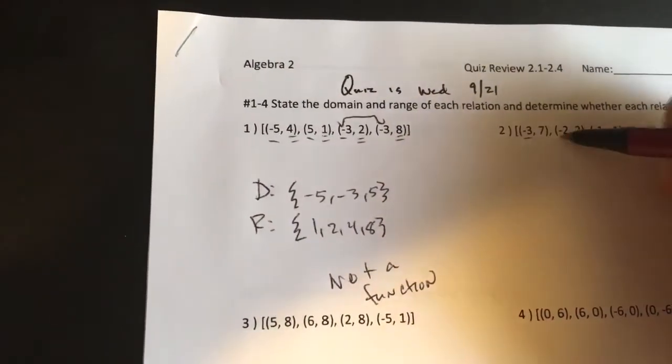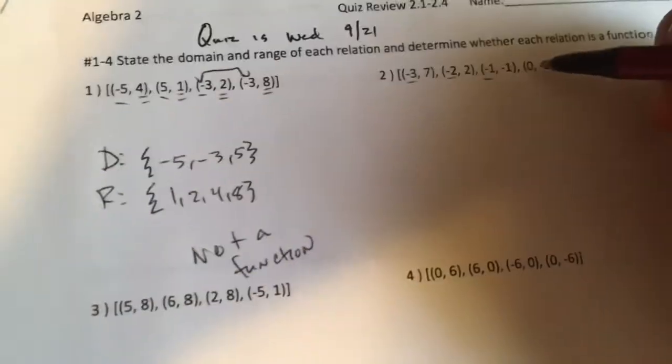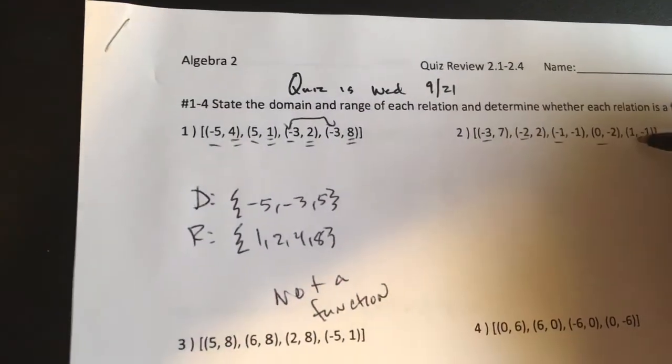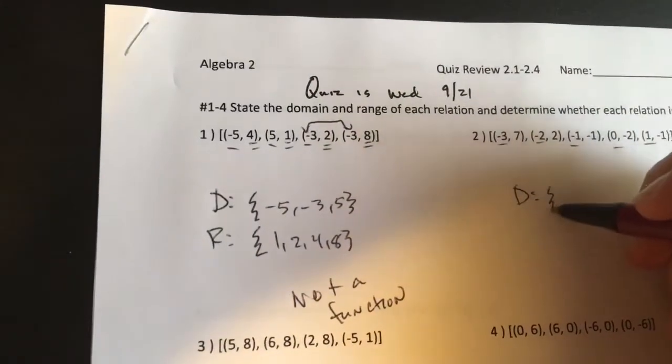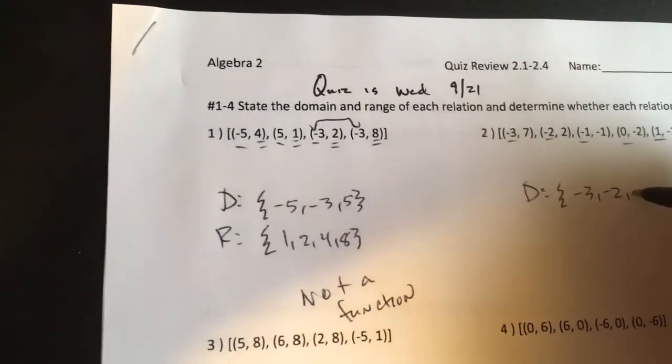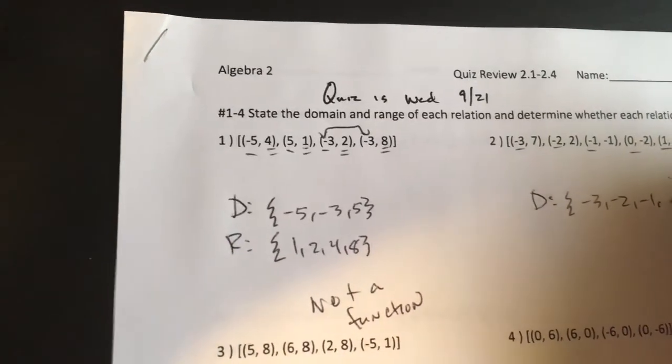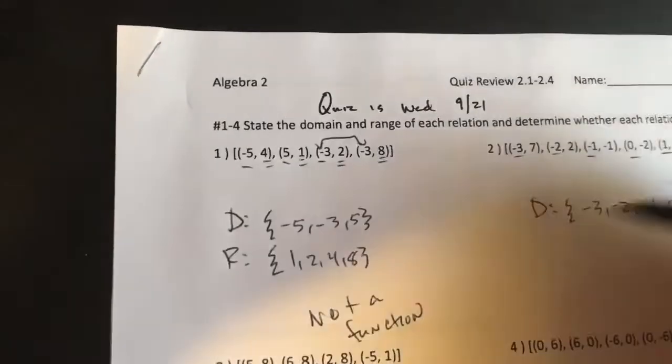All right, taking a look at this one. Negative 3, negative 2, negative 1, 0, and 1 for the x's. And that is all in order. Negative 3, negative 2, negative 1, 0. There you go. And 1.